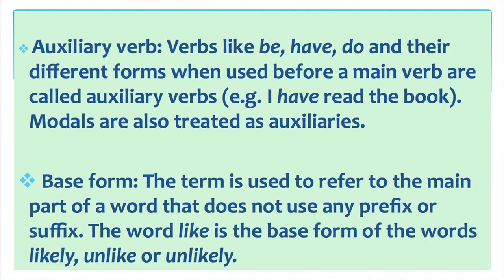Auxiliary verb: verbs like be, have, do and their different forms, when used before a main verb, are called auxiliary verbs — for example, I have read the book. Modals are also treated as auxiliaries. Base form: the term is used to refer to the main part of a word that does not use any prefix or suffix. The word 'like' is the base form of the words likely, unlike, or unlikely.